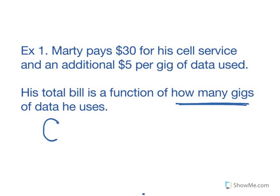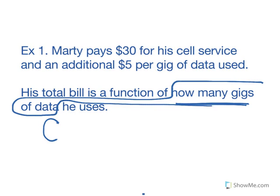So we're going to say how many gigs of data he uses is the thing we don't know: the x. And Marty's total bill, total cell phone bill, depends on how many gigs of data he uses. That is, C depends on x.